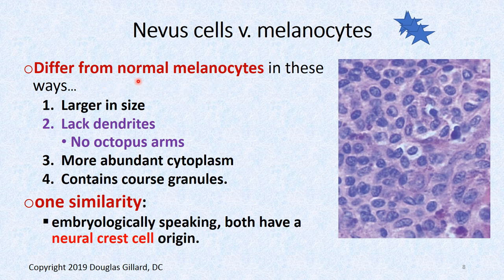What's the difference between nevus cells — like immature melanoblasts — versus melanocytes? They differ from the normal melanocyte by these characteristics: nevus cells are larger in size, they have no dendrites — no octopus arms — so they don't inject neighboring keratinocytes with melanin. They can give no color to neighbor cells, but they keep the color themselves. They have a lot of cytoplasm and contain coarse granules. One similarity embryologically: they're both derived from neural crest cells.